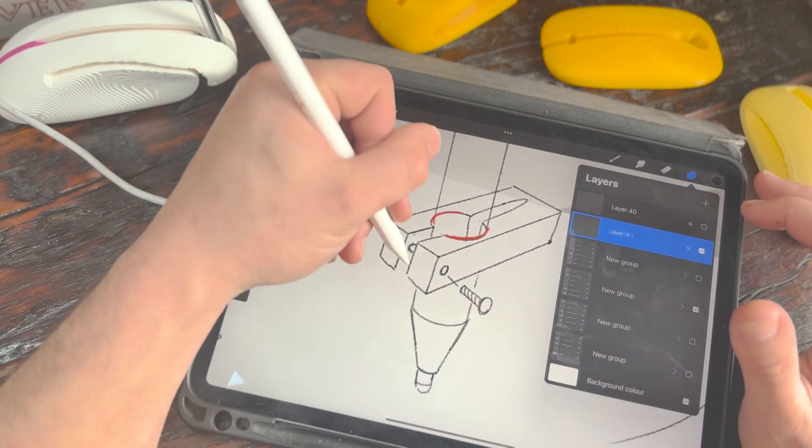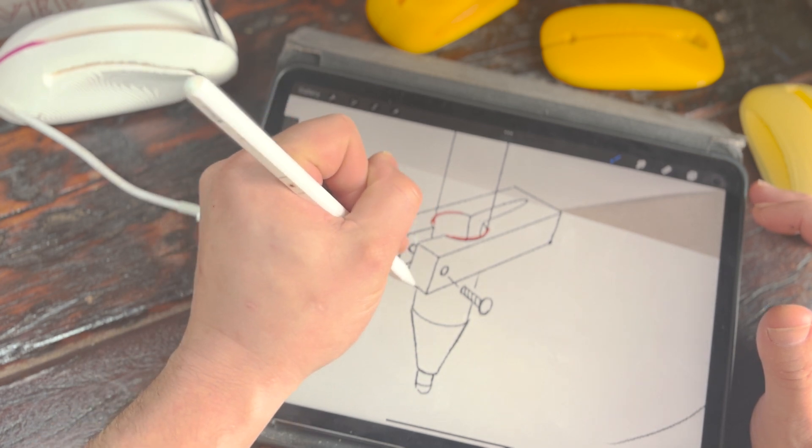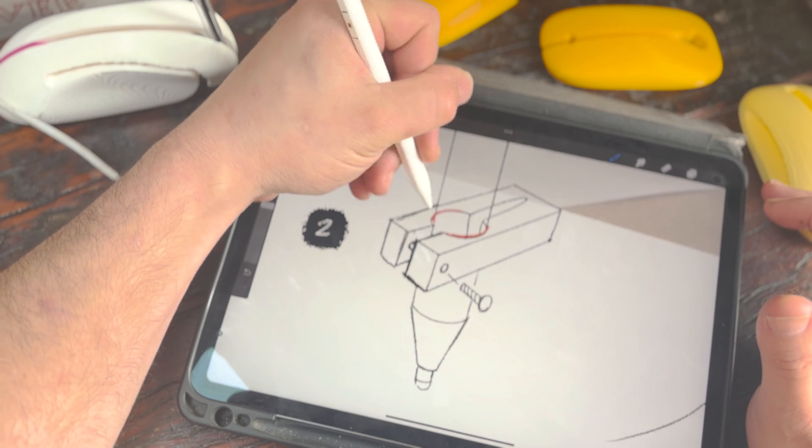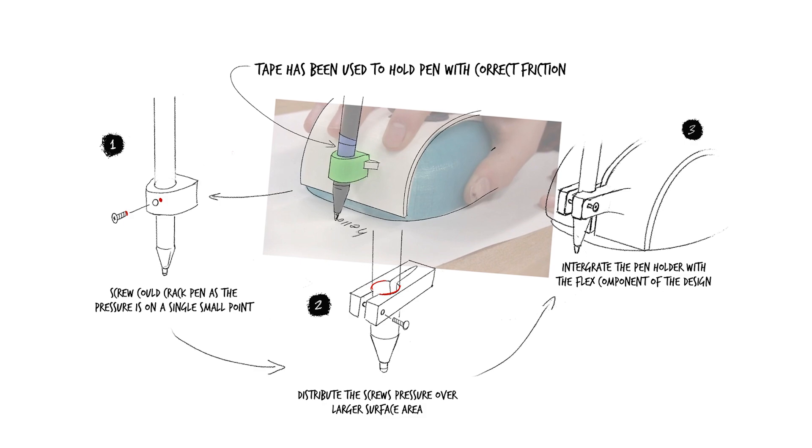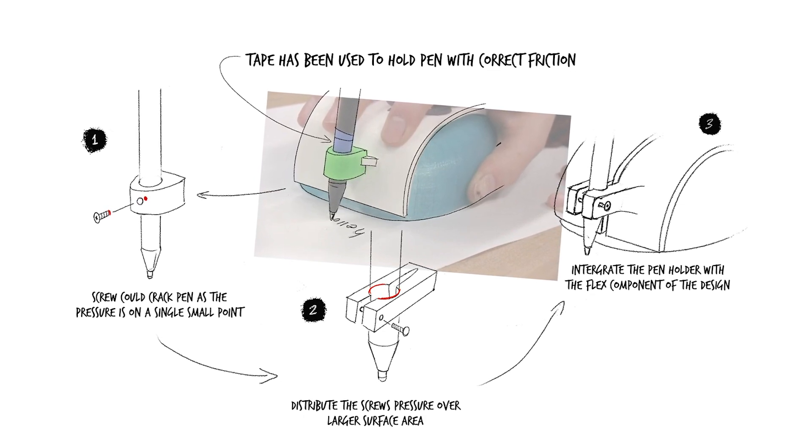I then went on to coming up with new ways of holding the pen, finally settling on a design which I hoped would dissipate the pressure across the body of the pen so as not to damage it. Thinking back to the design improvements I was trying to make, I came up with a design that embedded the pen holder into the flexure component of the mouse, reducing the part count and complexity of the assembly. I knew at this point there was a lot that could still be improved, but I had enough worked out now so that I could start prototyping in 3D.